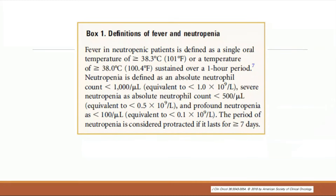Some main definitions to be aware of: febrile neutropenia is defined as a single oral temperature of 101°F or an oral temperature equal to or more than 100.4°F sustained over an hour. This is the parameter that nurses use on the floor, and that's what you will be called about. Neutropenia is defined as an ANC less than 1,000; profound neutropenia as ANC less than 100; and severe neutropenia as ANC less than 500.